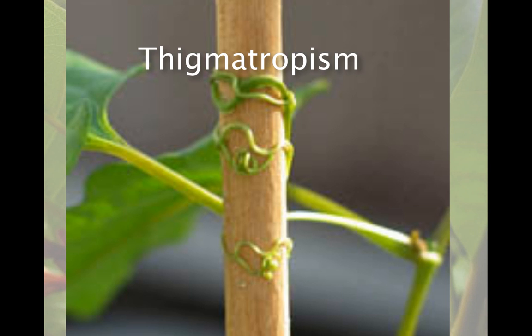Thigmotropism is growth movement in response to touch. For example, tendrils wrap around objects. Contact stimulates growth at different rates on each side of the tendril.